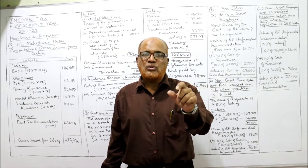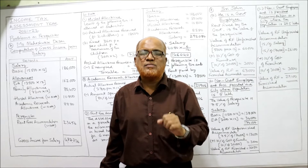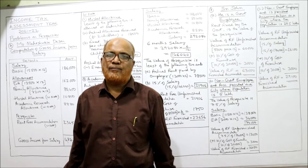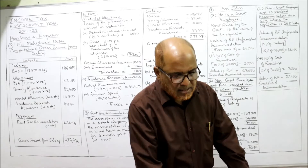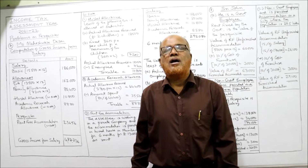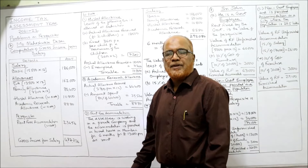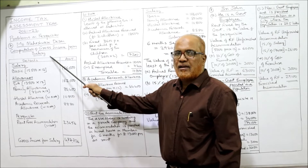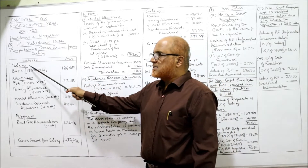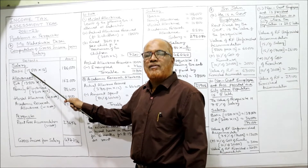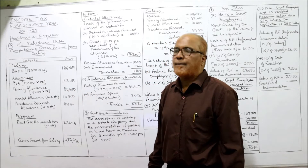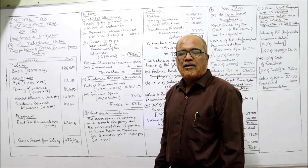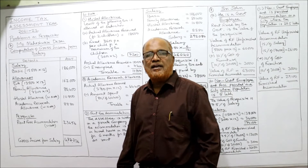The current assessment year is 2021-22, and the previous year ends on 31st March 2021. In the computation table for Mr. Maheshwari Desai — gross income from salary for assessment year 21-22: basic salary 15,500 per month into 12 = 1,86,000. DA 13,500 into 12 = 1,62,000. Family allowance fully taxable: 7,200 into 12 = 86,400.